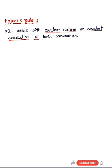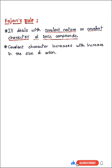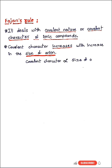Fajan's rule deals with the covalent nature of ionic compounds. This rule says that covalent character increases with increase in the size of anion, and that can be written as: covalent character is directly proportional to size of anion.